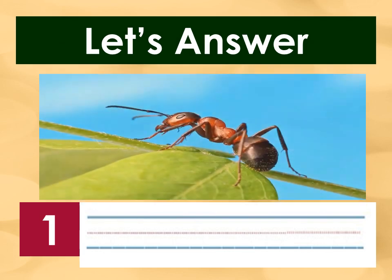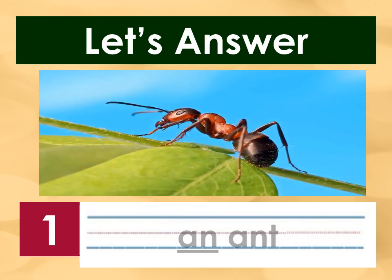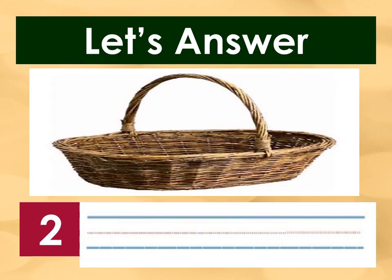That's correct! It's AN. 'And' starts with a vowel letter A. We use the article AN when the word after it starts with a vowel letter. That's correct! It's A. Basket starts with a consonant letter B. We use the article A when the word after it starts with a consonant letter.